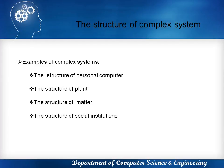The structure of complex systems. Here there are some examples of complex systems like the structure of personal computer, the structure of plant, the structure of matter and the structure of social institutions. These are some of the examples of complex systems.